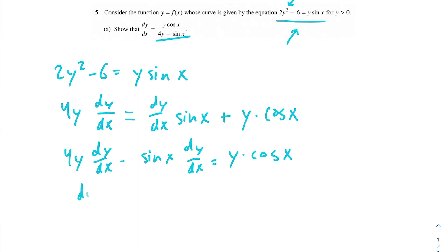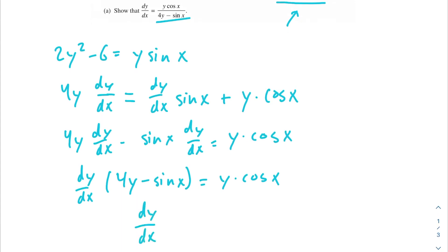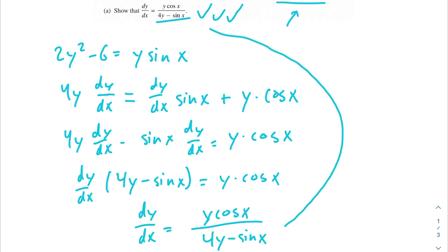Now we can factor out our dy over dx, because on the left side both terms have a dy over dx. Then we divide both sides by 4y minus sine of x to solve for dy over dx. So we get y cosine of x over 4y minus sine of x equal to dy over dx — it matches exactly with our derivative. Make sure your derivatives look the same, otherwise you're probably not going to get the points.